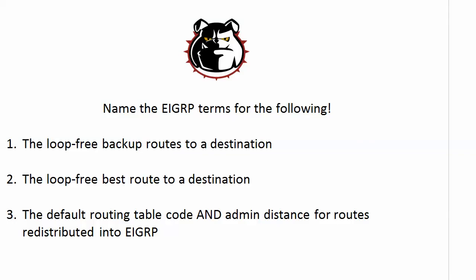Even if you think you know the answer to the question, stick around because I've got a little extra tip for you as well for a question that's not on the board. First, what's the EIGRP term for the loop-free backup routes to a destination? Then give me the term for the loop-free best route to a destination. And then give me the default routing table code and the admin distance for routes redistributed into EIGRP. I'm going to hit you with a fourth question related to these three when we look at the live equipment in just a moment.